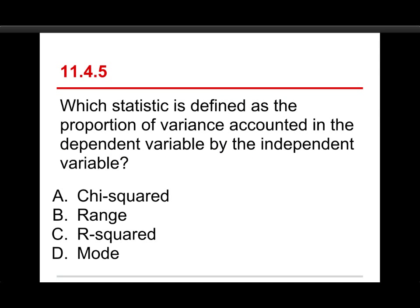Last one. Which statistic is defined as the proportion of variance accounted in the dependent variable by the independent variable? The choices are chi-squared, range, R-squared, or mode. Well the answer here is R-squared. That should actually be pretty simple because we haven't even talked about chi-squared yet. And the range is a measure of variation and the mode is a measure of central tendency.